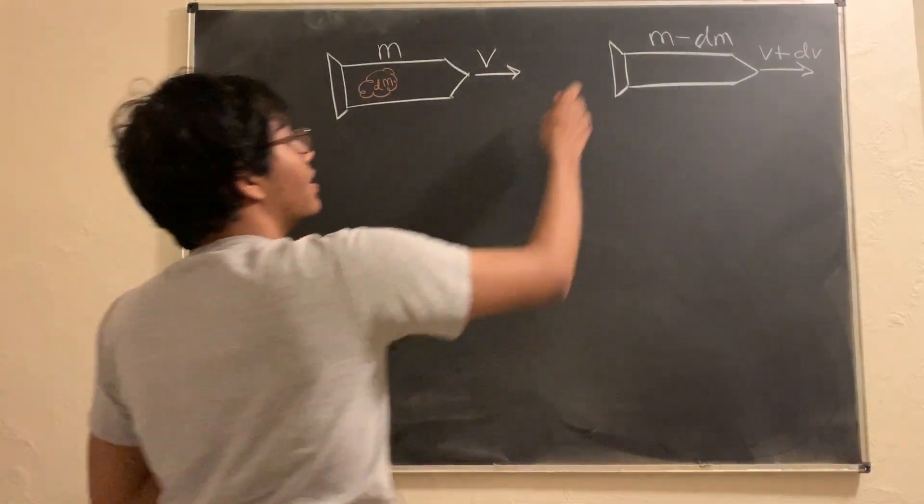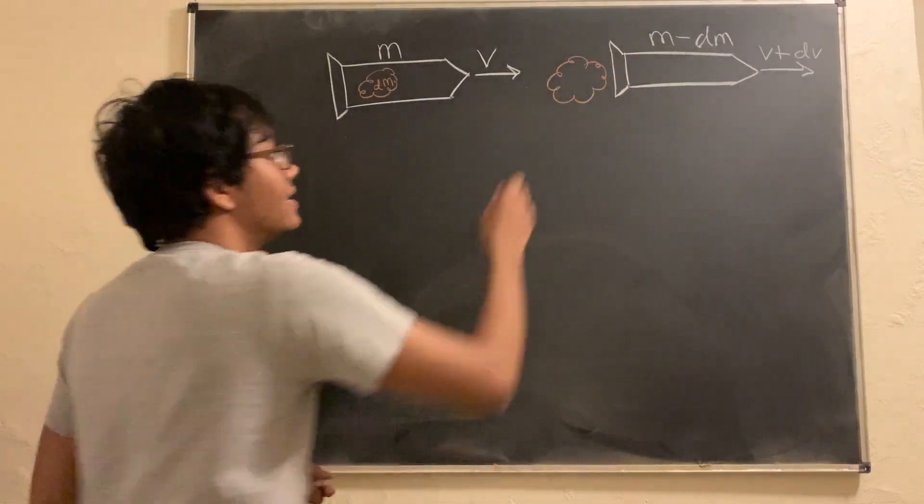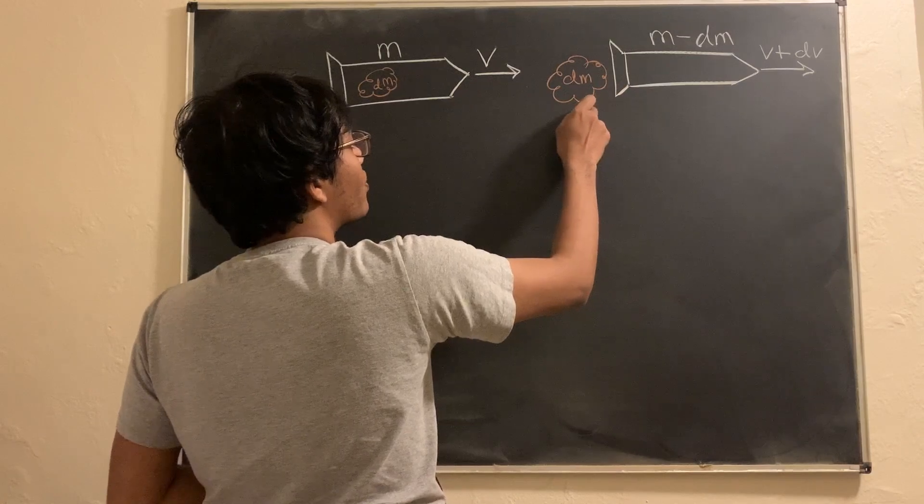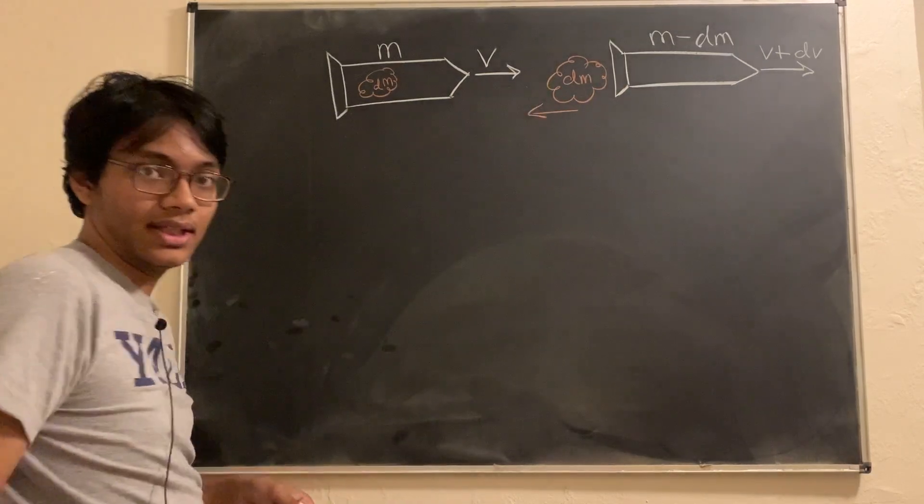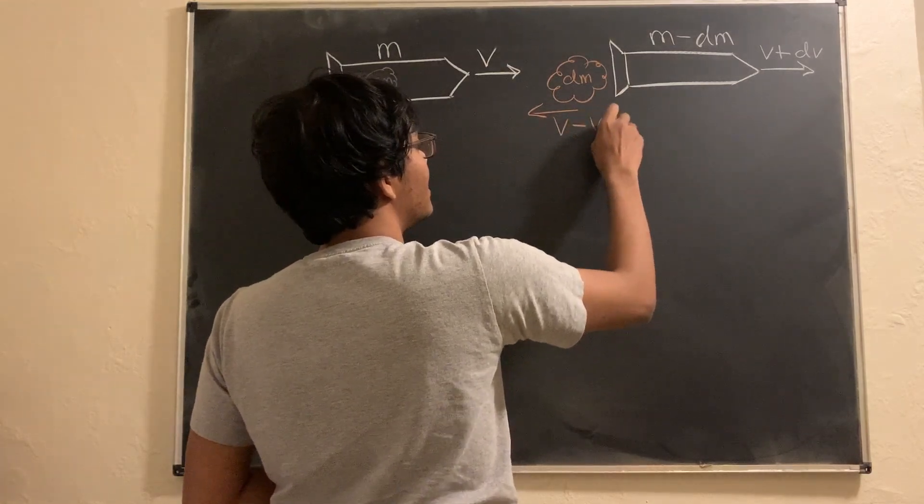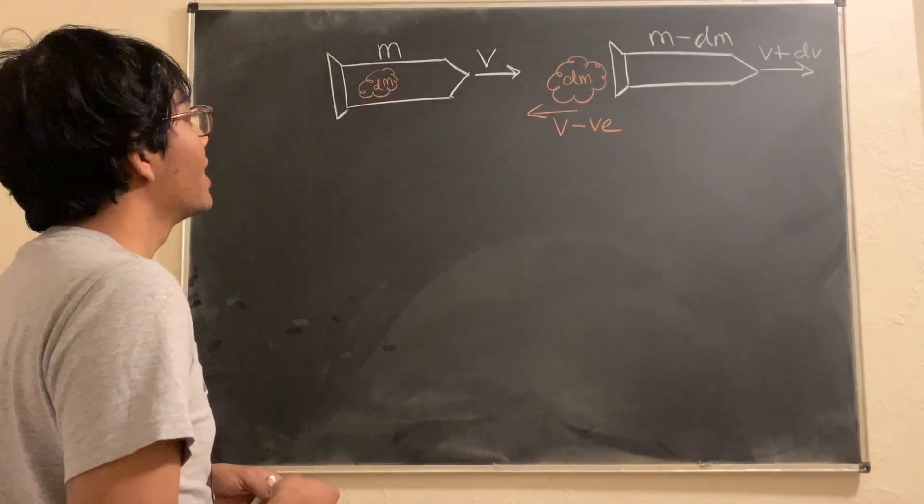But, remember, that's only because of this ejected gas, this dm that went down the other way. This dm, of course, has its own velocity. Its velocity is going to be the velocity of the rocket minus the exhaust velocity. That's how fast it comes out of the back.